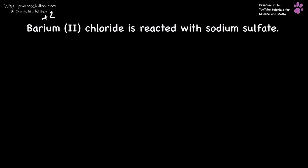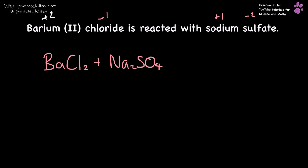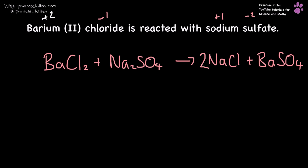Barium chloride — barium is plus two, chloride is minus one — reacts with sodium sulfate. Sodium is plus one and sulfate is minus two. So BaCl2 reacts with sodium sulfate, Na2SO4. Then we just get the ions switching place, so we get sodium chloride plus barium sulfate. We need to put a two in front of the sodium chloride and we're balanced.